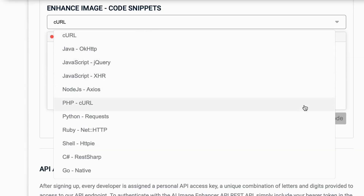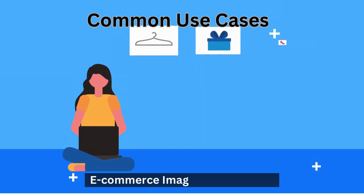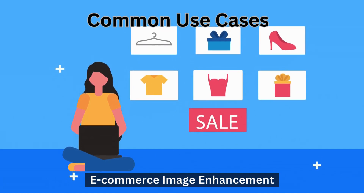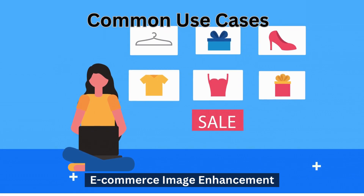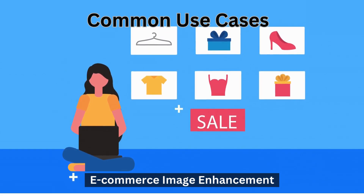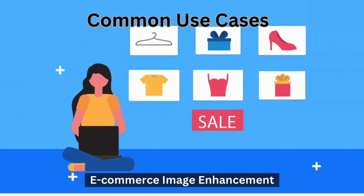Remember, you will find the code snippets below the documentation. Most common use cases include e-commerce image enhancement. By enhancing sharpness, colors, and details, the API can help online retailers showcase products in a more appealing and realistic manner, ultimately boosting customer engagement and increasing sales.